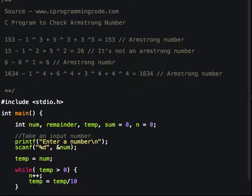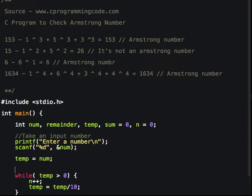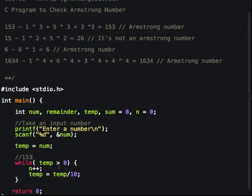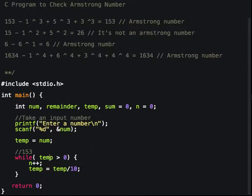If the input number is 153, in the first iteration temp is greater than 0, yes, so the value of n is 1, and after dividing by 10, the value of temp becomes 15. 15 is greater than 0, yes, the value of n is 2, and after dividing its value is 1. 1 is greater than 0, yes, so the value of n is 3, and this time the value of temp is 0. So we have found the length of the number, which is 3. This is clear.